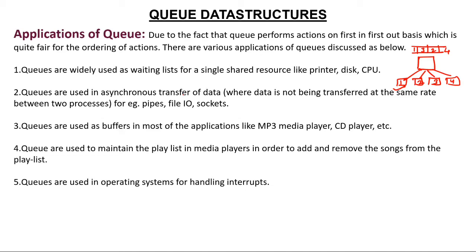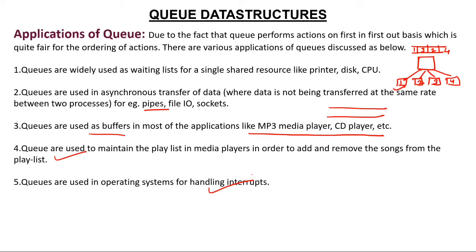Queues are used in asynchronous transfer of data — when data is not being transferred at the same time, it needs to be stored temporarily in pipes, which act as queues. Queues are also used as buffers in applications like MP3 players and CD players — you select songs and put them in a queue; once one song finishes the next one starts. Queues are also used in operating systems for handling interrupts — since multiple interrupts cannot be handled simultaneously, they are placed in a queue.